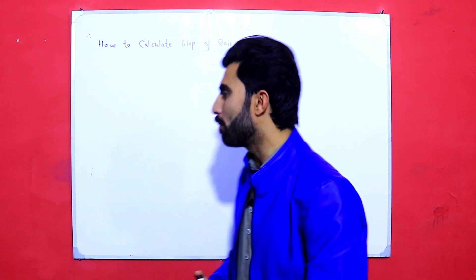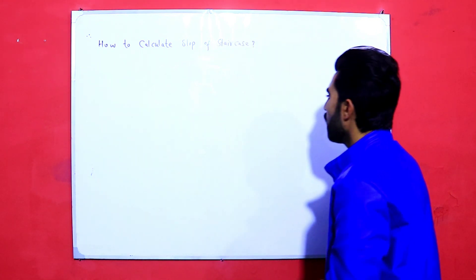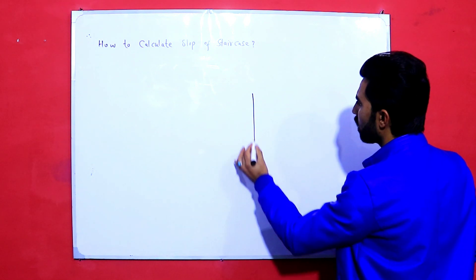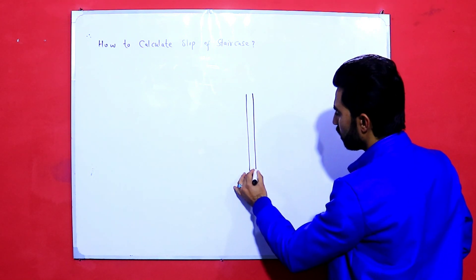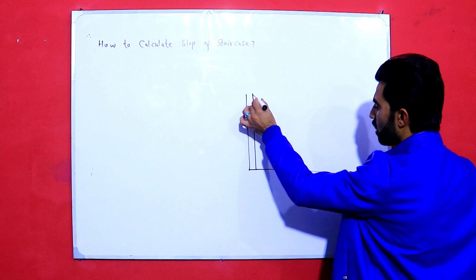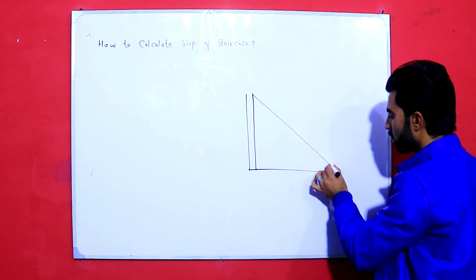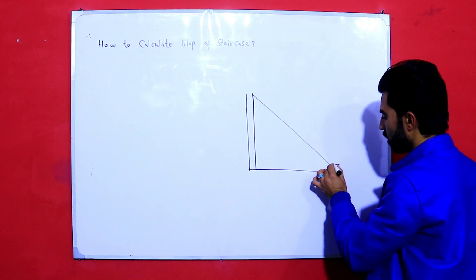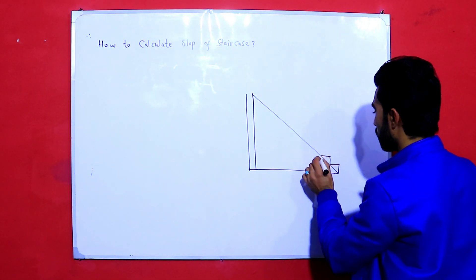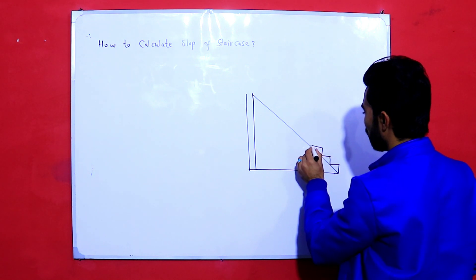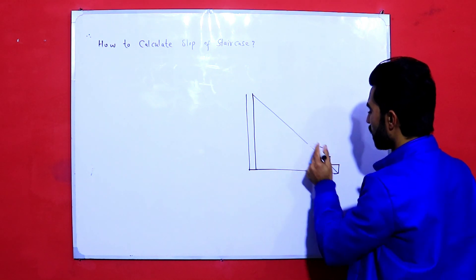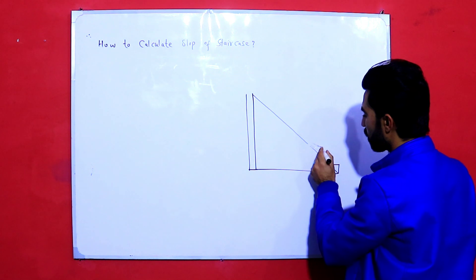As you can see, this is a wall and this is the staircase. My diagram is not great but I will try to make something for you. So you can see this is the staircase.